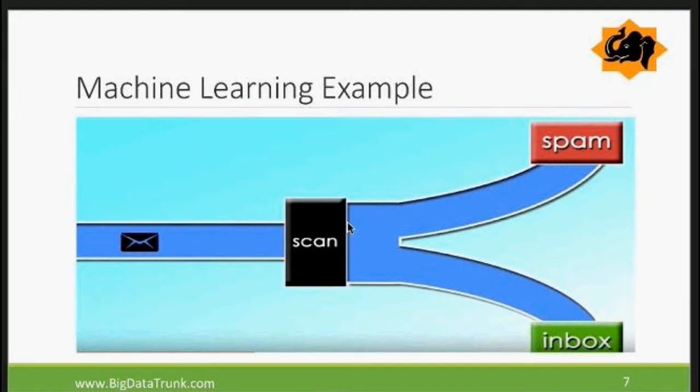In terms of techniques, machine learning can be taught as a hybrid of two things. We have statistics, which gives us probability and the science of it. The other aspect is data mining — how we can mine huge amounts of data, because that's what you need to really be able to predict the future. So it's a combination of statistics and data mining.